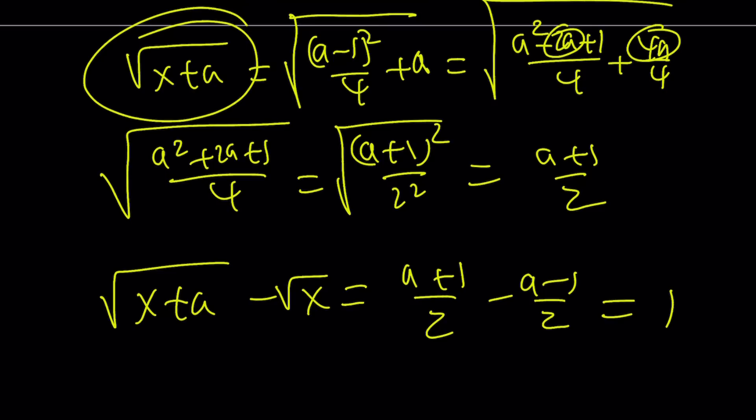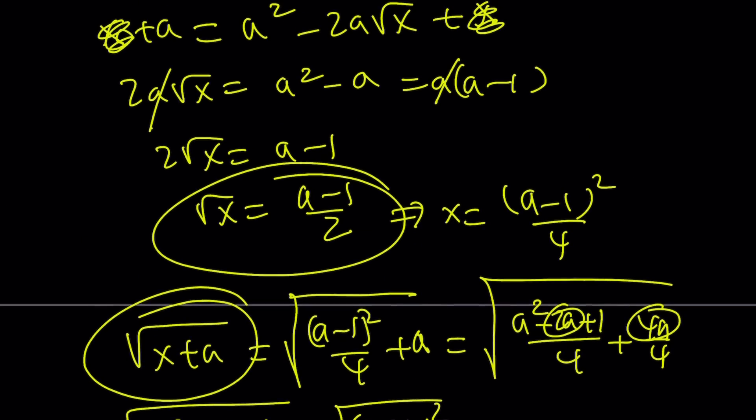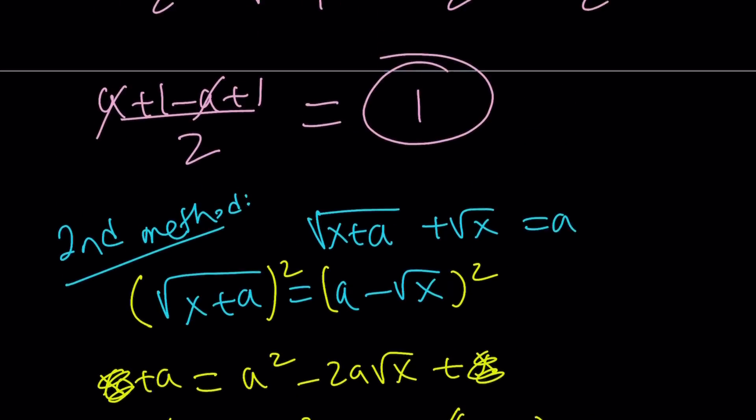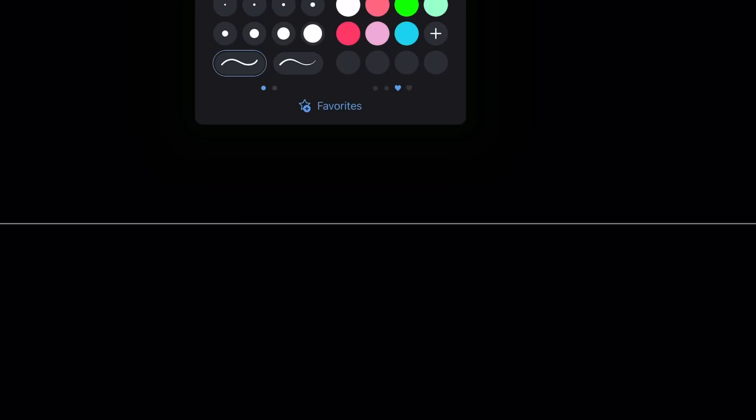Right. Alright. Great. So one more time. What I did was instead of isolating the square root of x, I isolated square root of x plus a. And I got the same result. Okay. So hopefully, the second method is, I don't know if it's shorter, but it's about the same, I think.